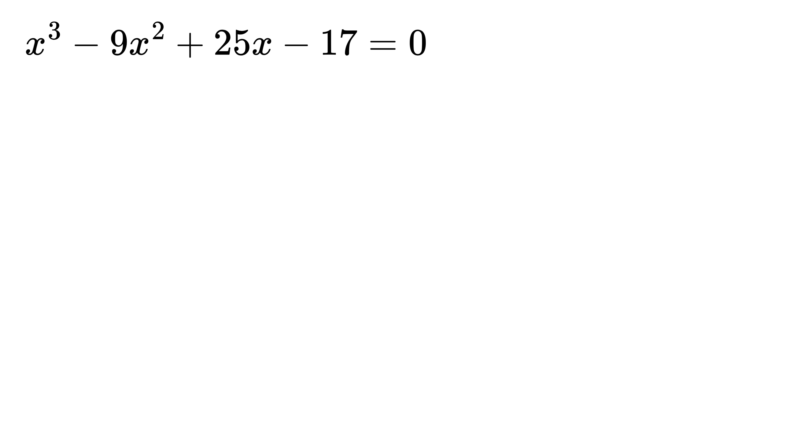For that, consider a general cubic equation of the form x³ + bx² + cx + d = 0. Now in our case, b is -9, c is 25, and d is -17, right?